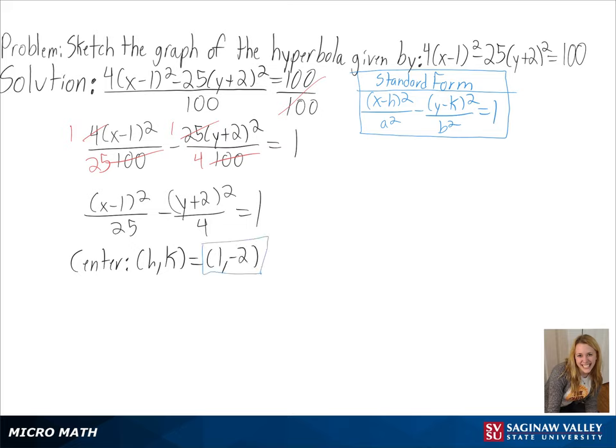Next, we need to figure out a and b since they will determine our vertices. For a, we get 5, so we will be going left and right 5 units. And for b, we get 2, so we will be going up and down 2 units.